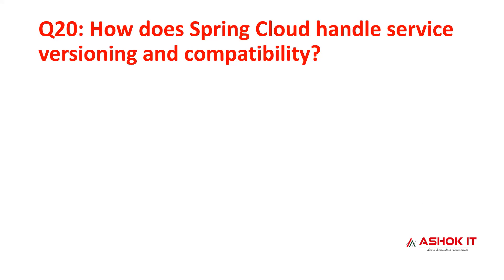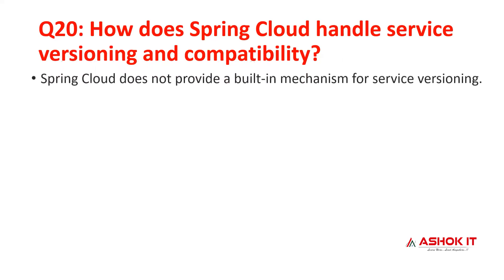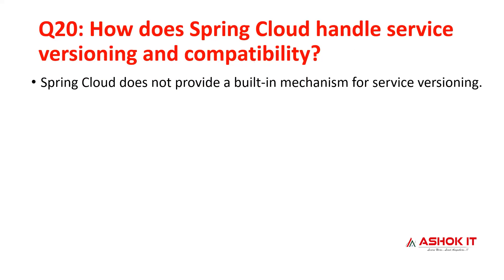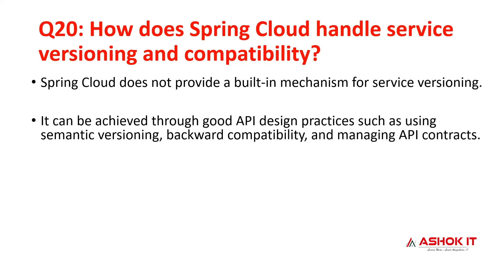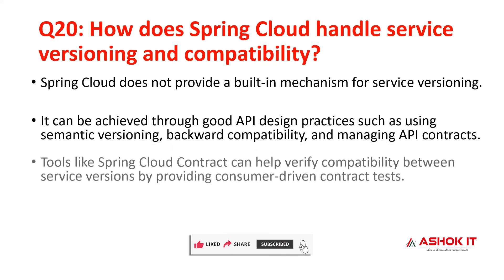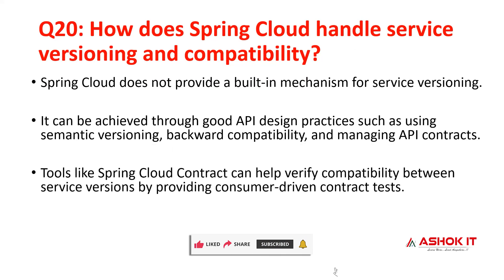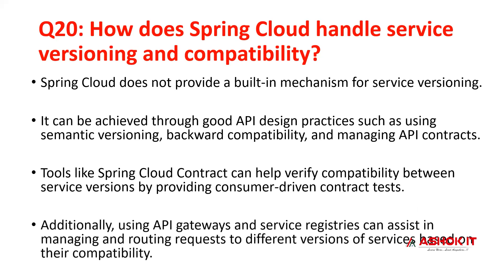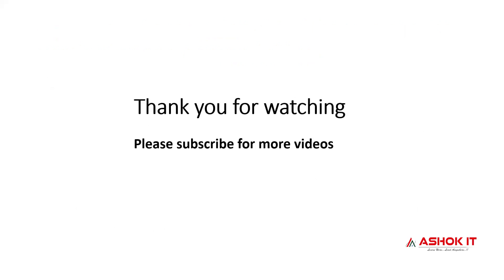Question 20: how does Spring Cloud handle service versioning and compatibility? There is no direct approach in Spring Cloud, but we can handle it using standard API design, semantic versioning, backward compatibility support, and maintaining API contracts. Spring Cloud Contract can verify compatibility between service versions. In consumer-driven contracts, API gateways and service registration can manage and route to different versions of services based on compatibility. Thank you for watching — please subscribe to our channel for more videos.